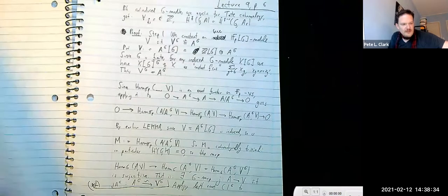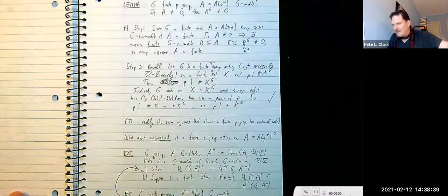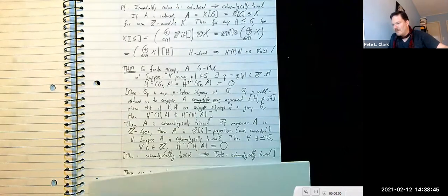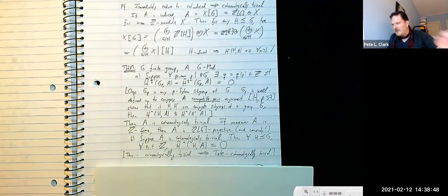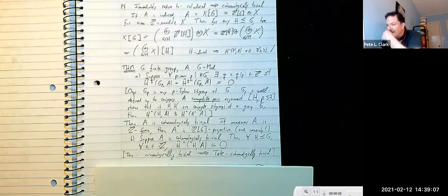Now I go back to the big theorem I really wanted to prove. I have a finite group, a G-module, and suppose that prime-by-prime there is a Sylow p-subgroup of G and two consecutive indices for which the Tate cohomology restricted to that Sylow p-subgroup of A equals zero. The conclusion is that A is cohomologically trivial.